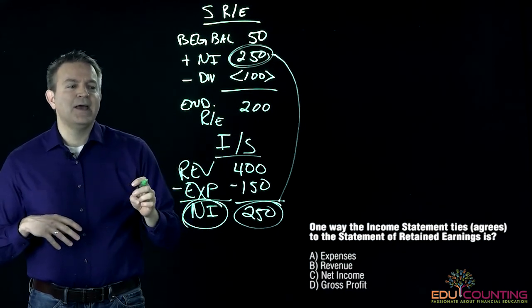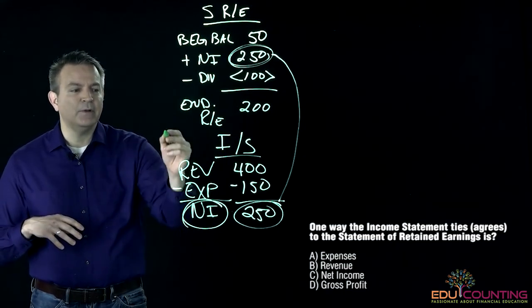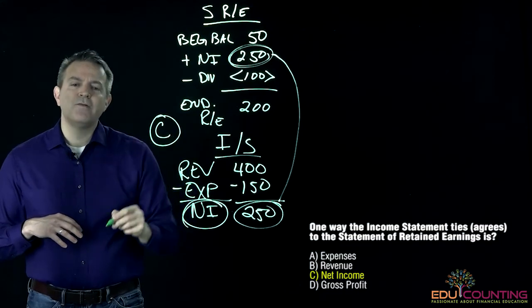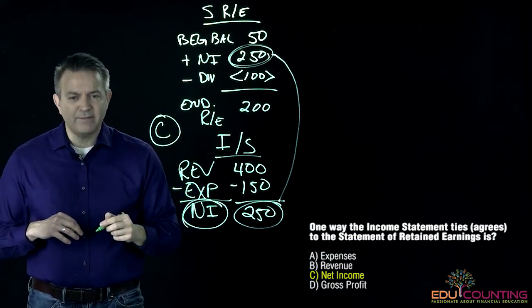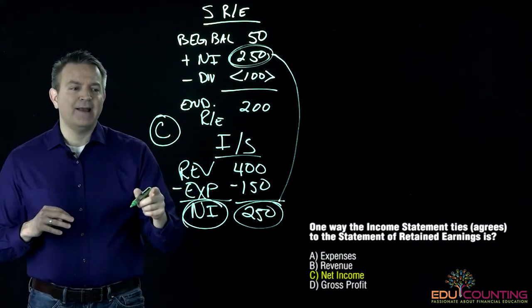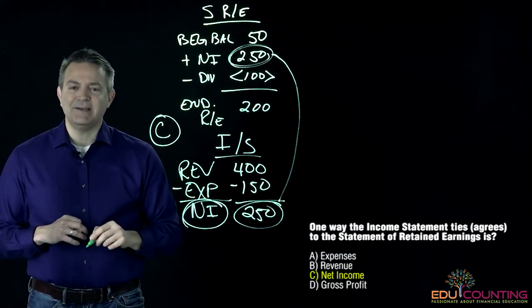What about the next one? Is it going to be net income? Absolutely. We're looking at C. As we go forward, we're going to talk about gross profit and what that is, but for right now, the answer to this one is going to be net income.